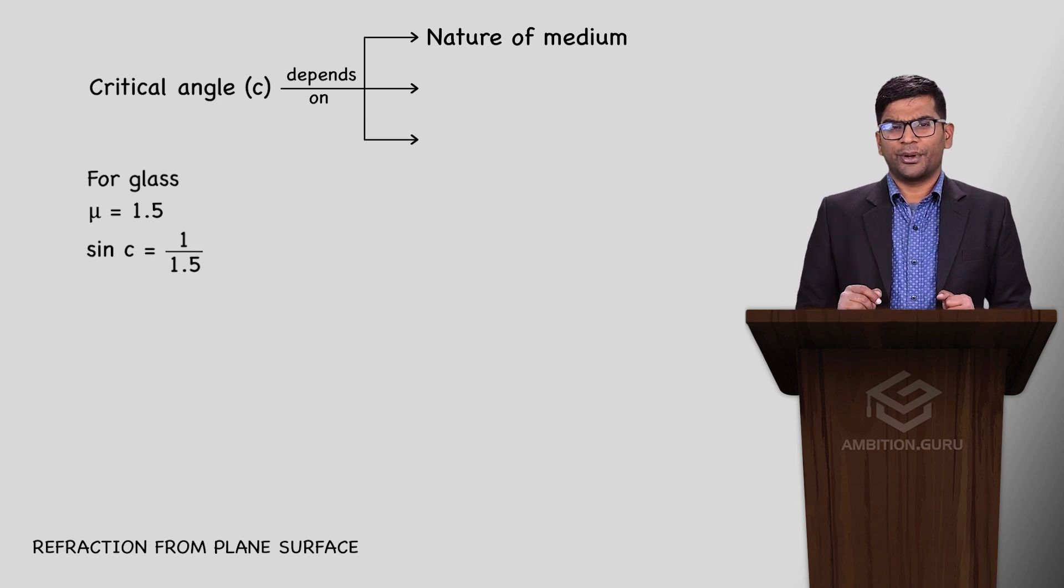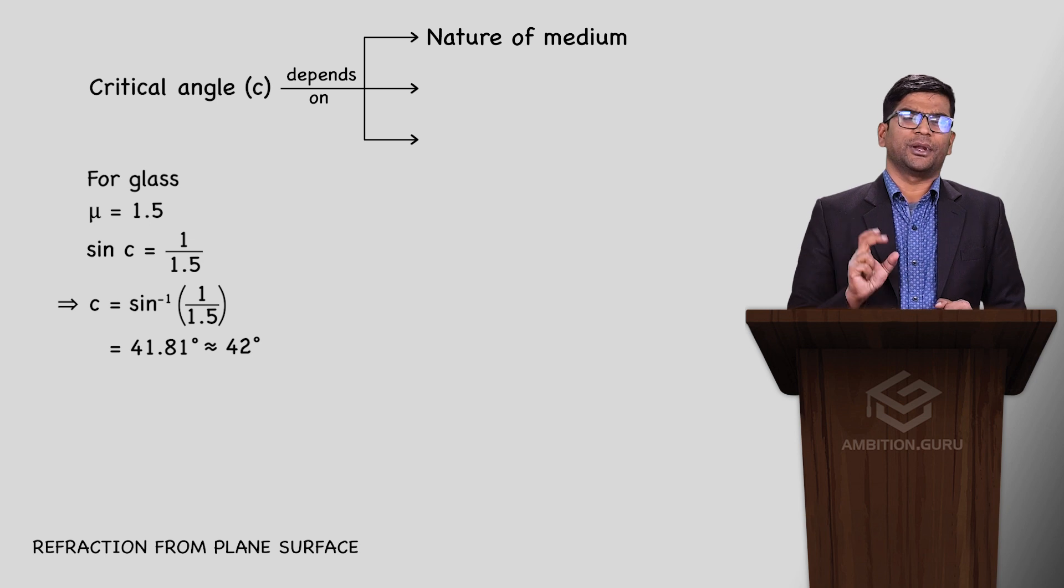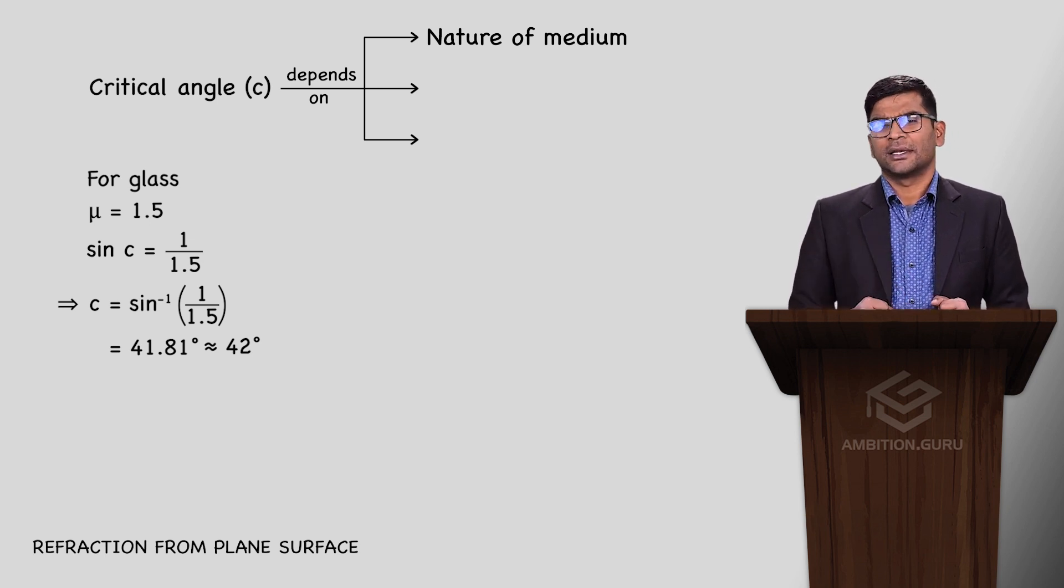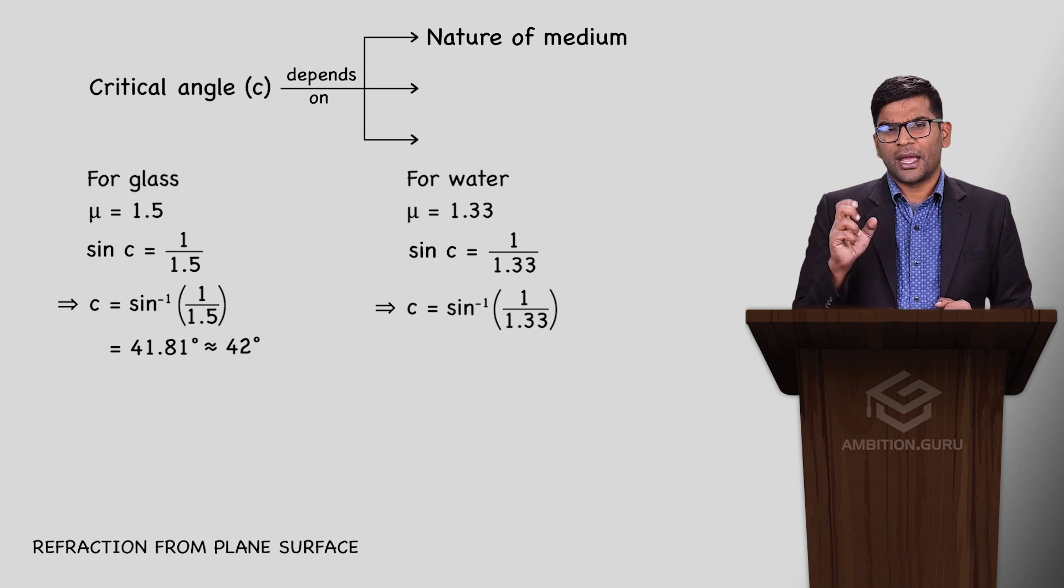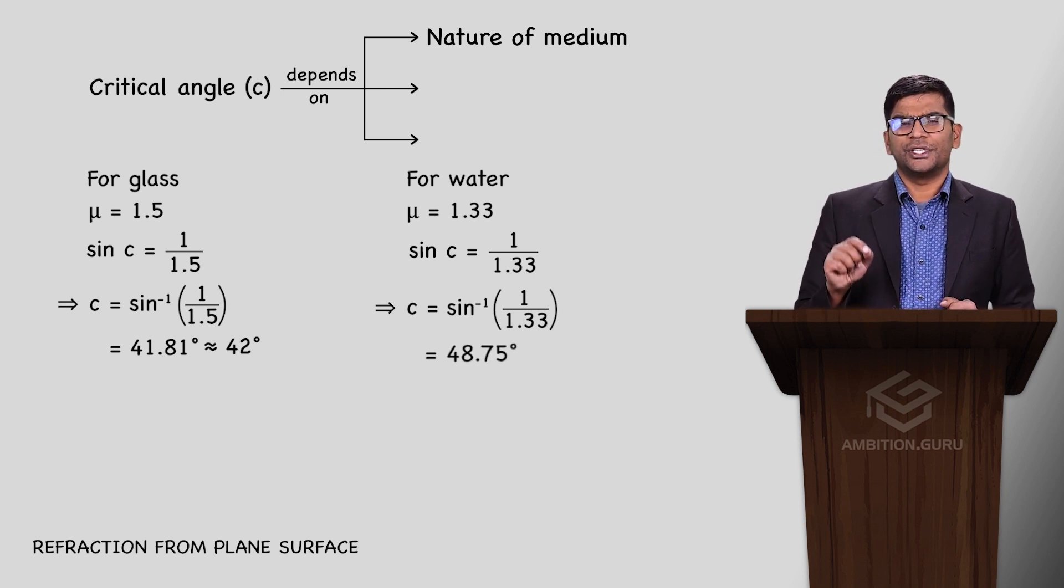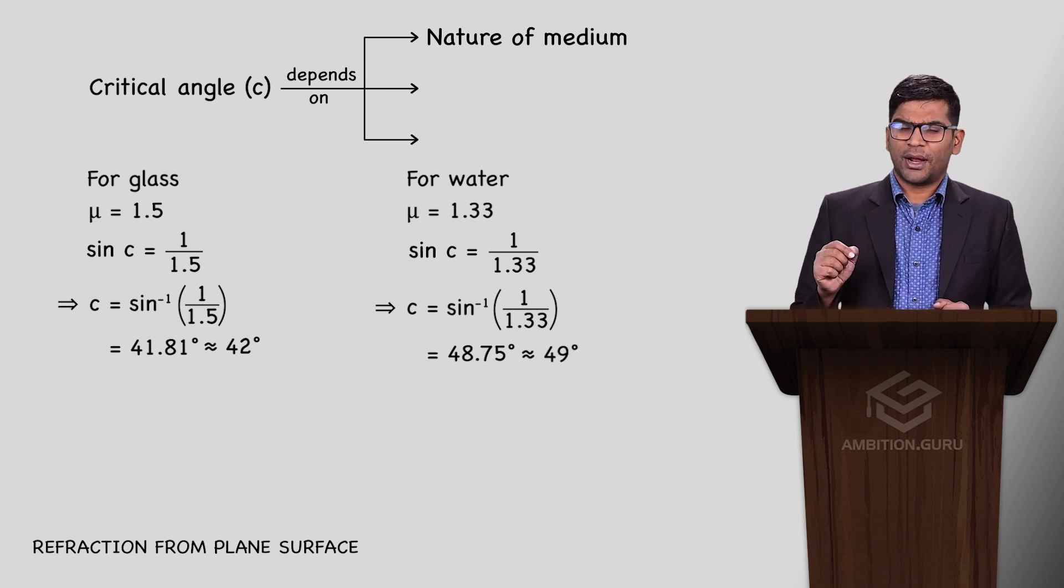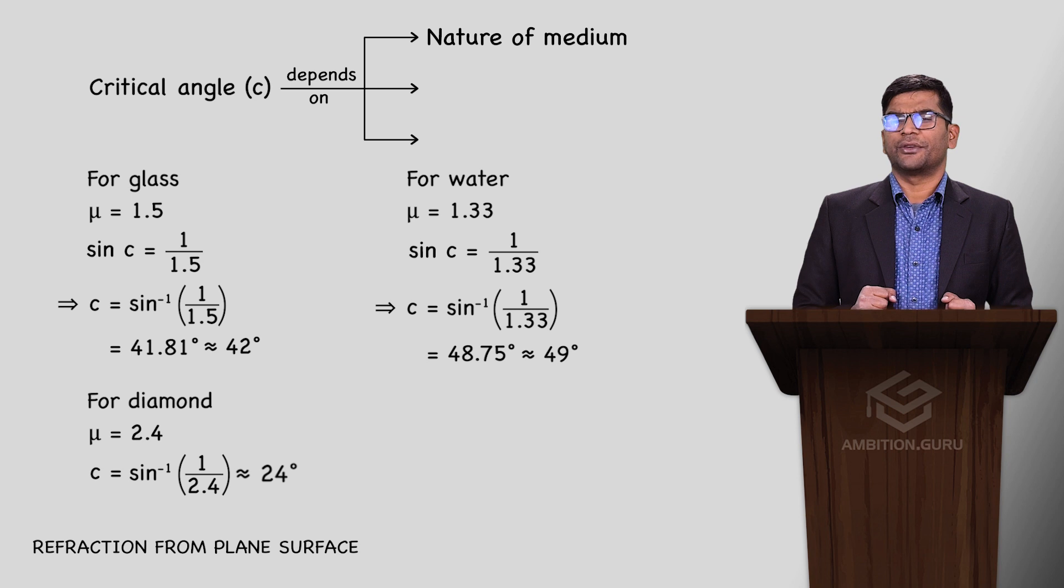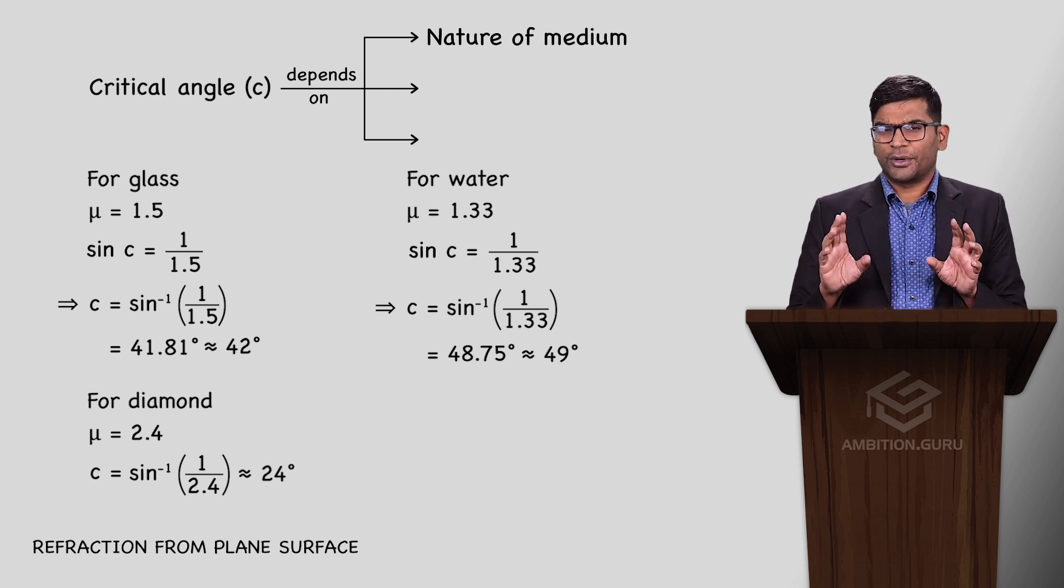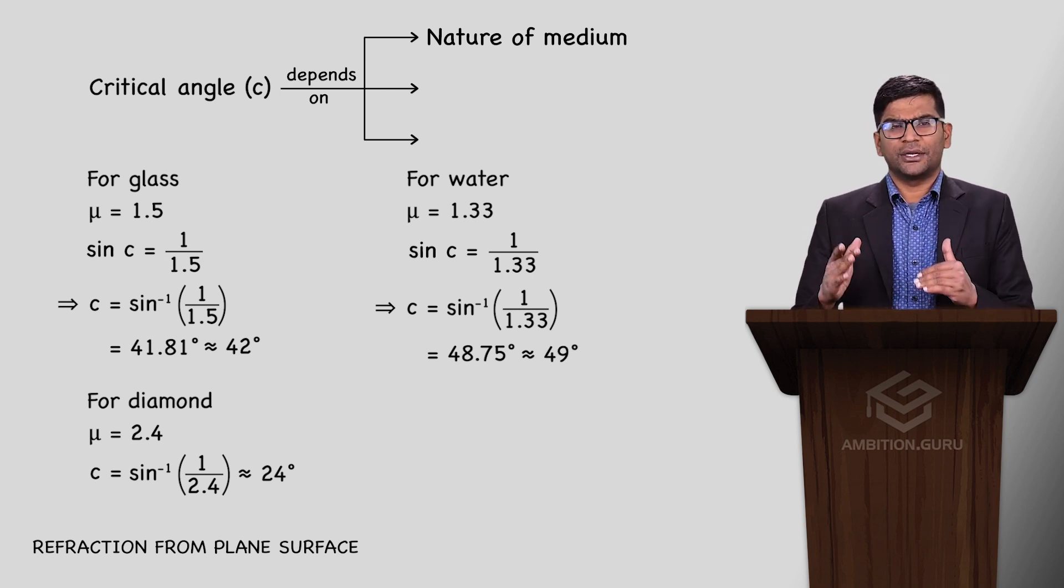For glass with μ = 1.5, sin c equals 1 by 1.5, so c equals sin inverse 1 by 1.5, which is 41.81 degrees, almost 42 degrees - the critical angle of glass. Critical angle of water: sin c equals 1 by 1.33, which gives sin inverse 1 by 1.33, equal to 48.75 degrees, nearly 49 degrees. Diamond has μ = 2.4, critical angle nearly 24 degrees. So glass is nearly 42 degrees, water nearly 49 degrees, diamond nearly 24 degrees.